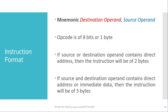If both the source and destination operands contain a direct address or immediate data, the instruction will be three bytes: one byte for the opcode, one byte for the direct address, and one byte for the other direct address or immediate data. One important note: immediate data cannot be placed in the destination operand location — it must always be in the source operand location.